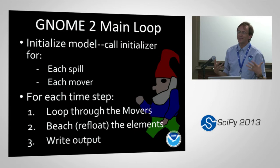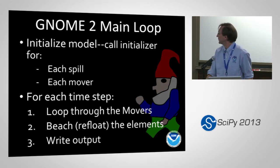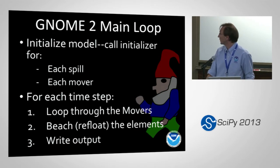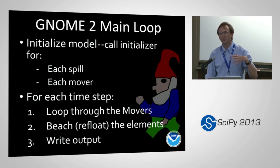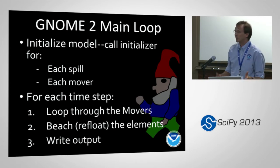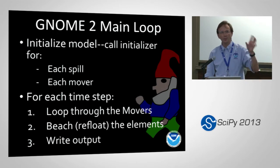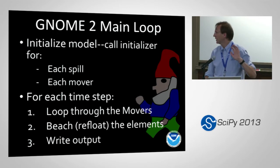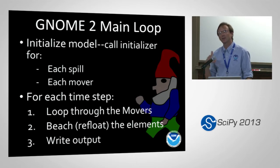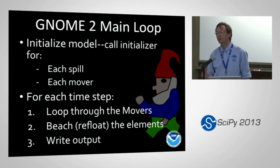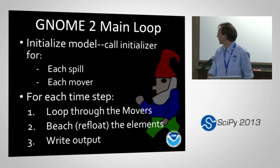Putting all these pieces together in GNOME's main loop: we start by initializing the model — going through each spill and each mover and telling it to initialize itself. Then in each time step, we loop through the movers and say, do your thing. Then we go to the maps, which handle beaching or refloating elements or figuring out if stuff has gone off the map or out of the domain. Then we write the output and repeat.